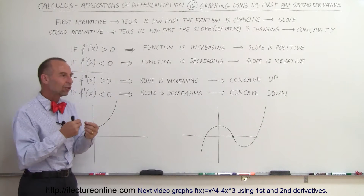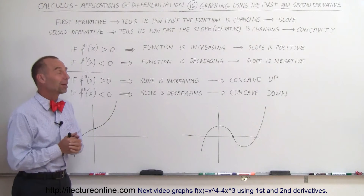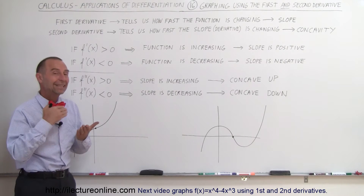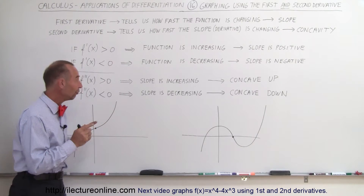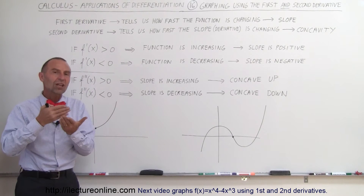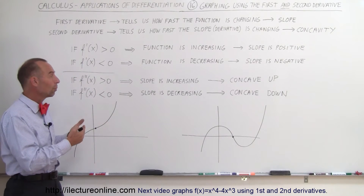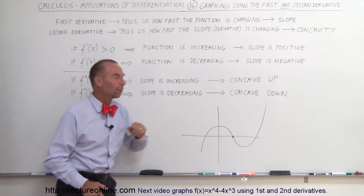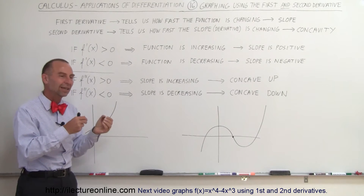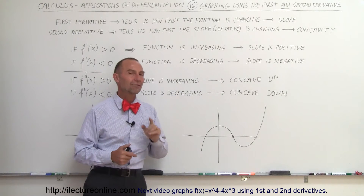The second derivative gives you the change of the first derivative — it tells you how fast the first derivative is changing, how the slope is changing. So if the second derivative is positive, it tells you that the slope is changing in a positive manner, meaning the slope is getting larger — the slope is increasing. We call that concave up. And if the second derivative is negative, that means the slope is decreasing, getting smaller. We call that concave down.